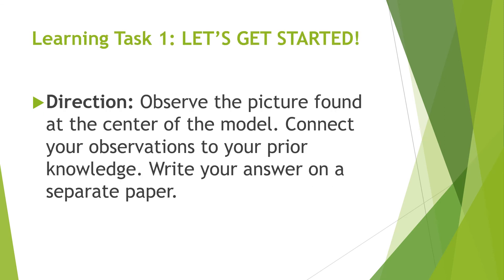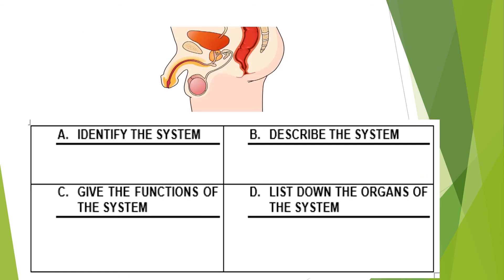Now that we are done discussing the reproductive system, let's proceed to Learning Task 1. Direction: Observe the picture found at the center of the model. Connect your observations to your prior knowledge. Write your answer on a separate paper. Observe the picture above, identify what is the system, describe the system, and give the functions of the system.